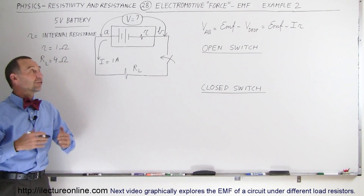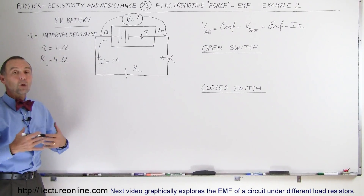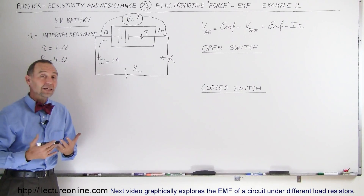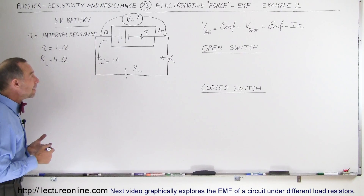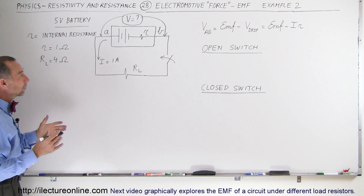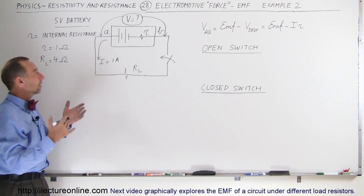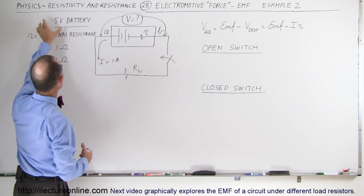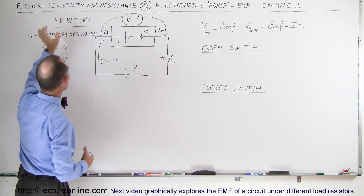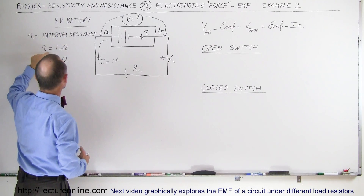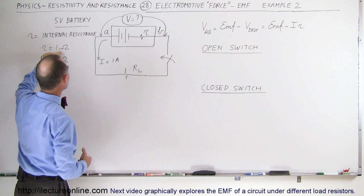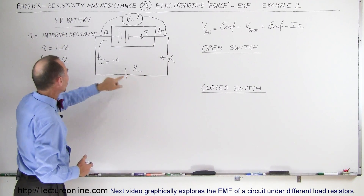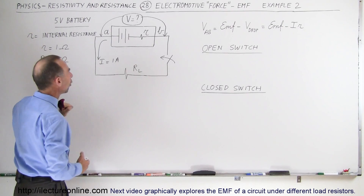Welcome to Electronline. Here's an example that will hopefully solidify our understanding of the EMF. We have a battery with a 5-volt EMF, an internal resistance of 1 ohm, and an outside load resistor of 4 ohms.